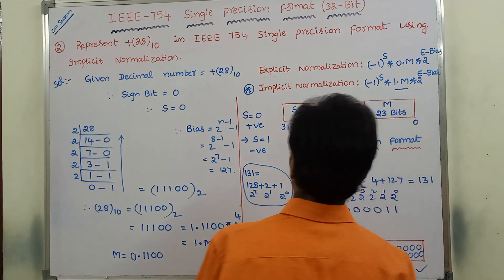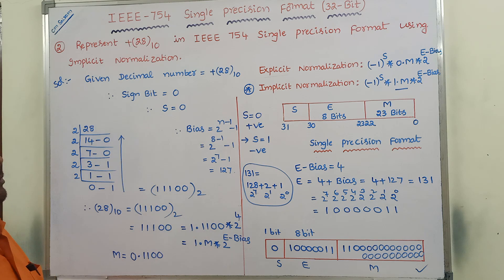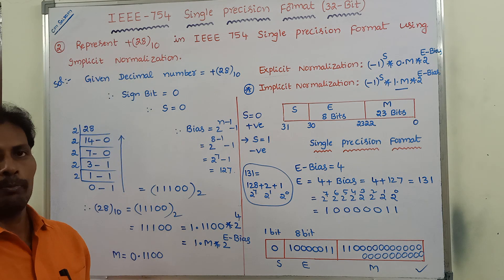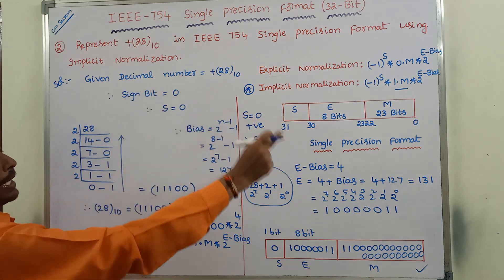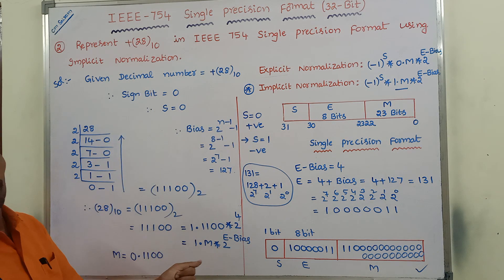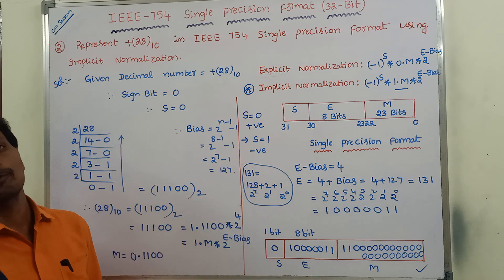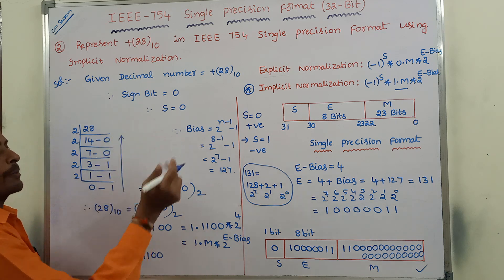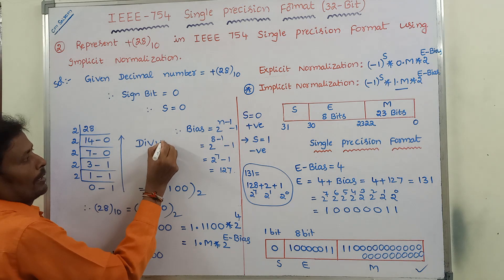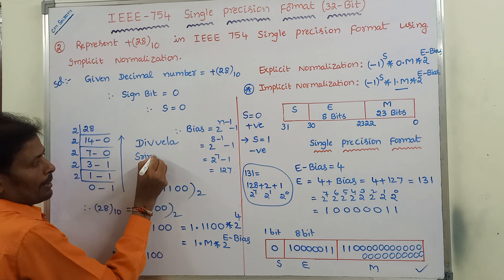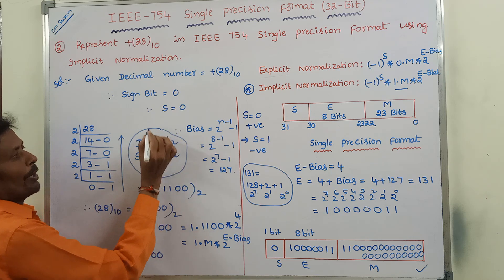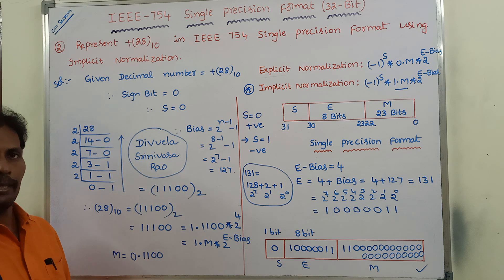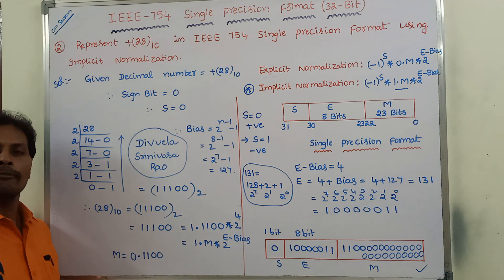This is the answer. This is how we solve the given problem. Representing +28 base 10 gives a 32-bit IEEE 754 single precision format. I hope all of you understood this video. If you did, please click the like button, share this video with your friends and classmates, and subscribe to my YouTube channel. Click the bell icon to get future updates. If you have any doubts, put your comments in the comment box and I will try to clarify them. Thank you all for watching.